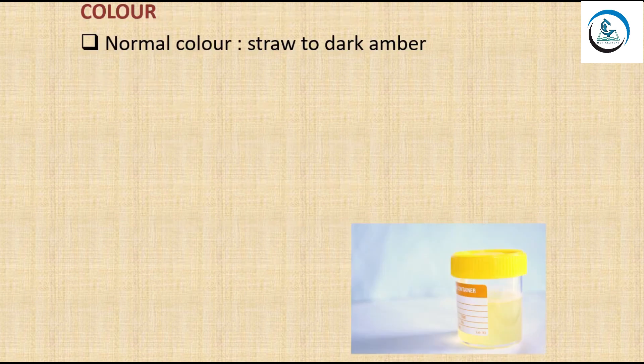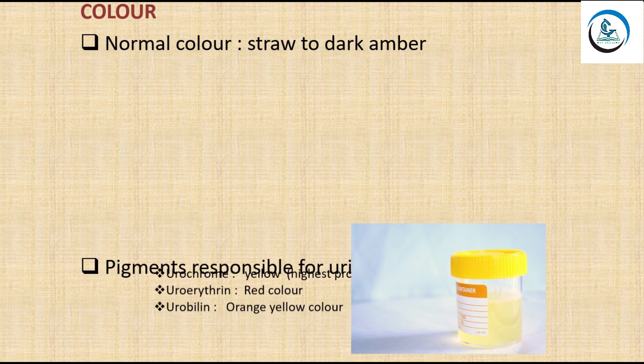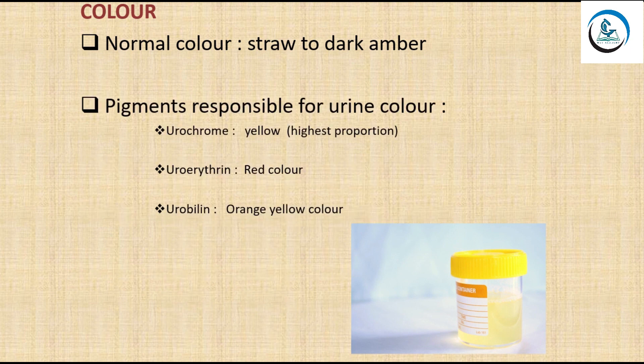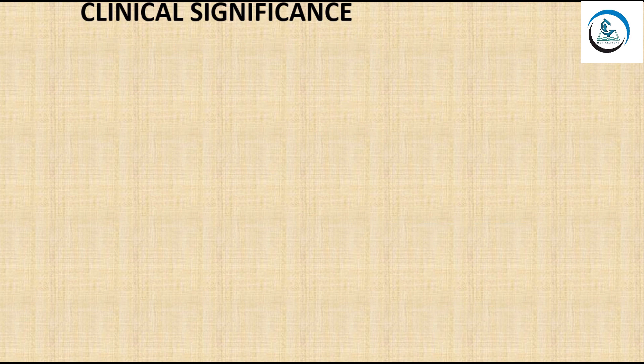Normally, urine has a straw to dark amber color. The pigments responsible for urine color are urochrome, which provides yellow color and is present in the highest proportion; uroerythrin, which gives a red color; and urobilin, which gives an orange-yellow color.